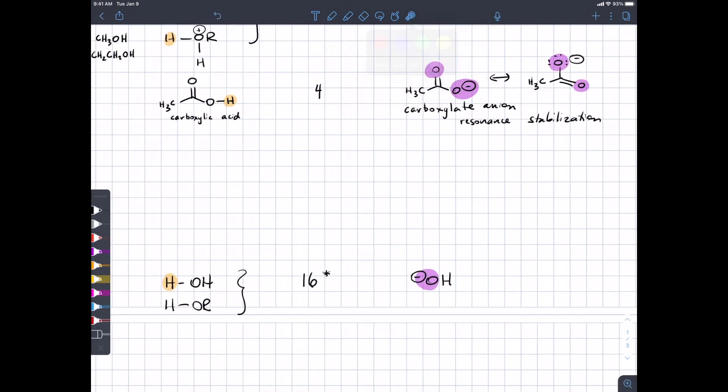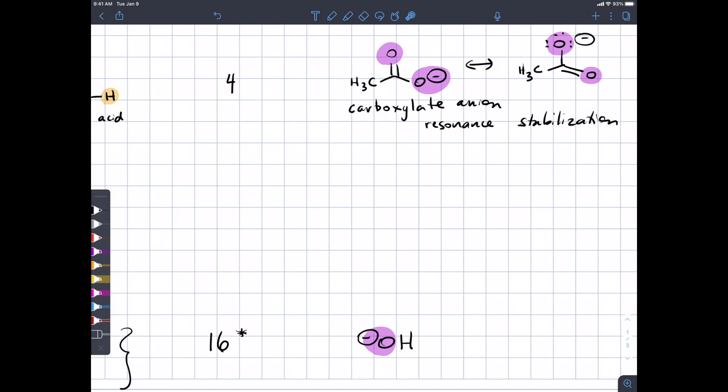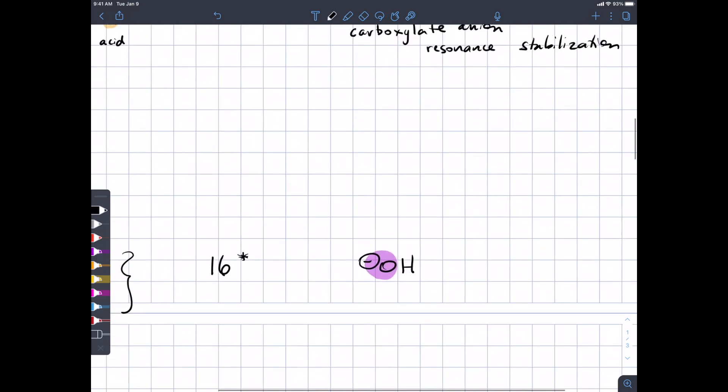That resonance stabilization of the conjugate base lowers the penalty for having a negative charge, and this allows us to state a principle that's general throughout organic chemistry. Molecules are acidic when they have stable conjugate bases. It's often easiest to rationalize acidity trends by comparing the stability of the conjugate base.